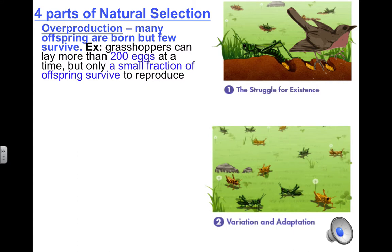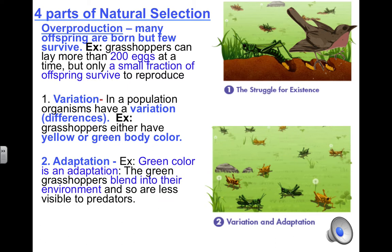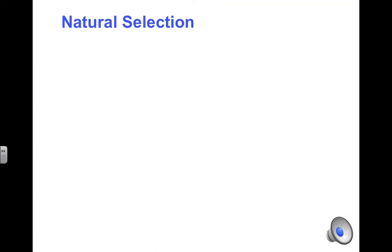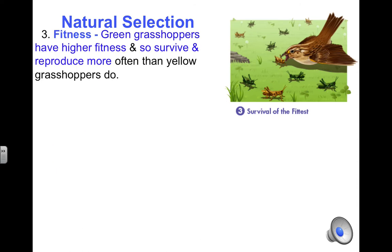The grasshoppers that do survive show a variation in traits. The variation or difference in traits would be their body color — some grasshoppers are yellow while others are green. The adaptation that allows the grasshoppers to survive would be the green body color, as it helps them to blend in with their environment so they are less visible to their predators. Since the green grasshopper can blend in with its environment, it has a higher fitness — in other words, a better chance of surviving — and because of this, it can reproduce more.